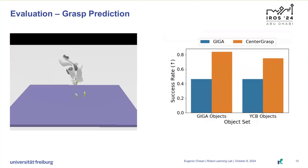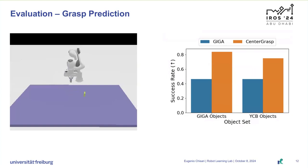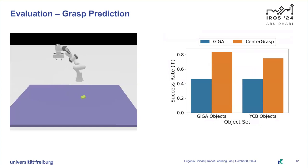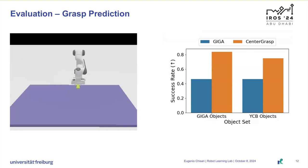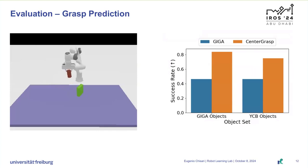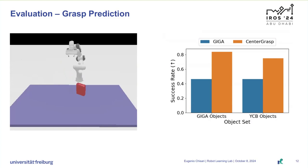We first evaluate our model in a simulated environment built using the Sapien simulator. The environment consists of a Franka robot with a wrist-mounted camera and a table where objects are randomly dropped. For each episode, the robot captures an RGBD observation, predicts a set of grasps, and then executes the chosen one. We evaluate grasp success against our main baseline GIGA on two different sets of objects: the objects from the original GIGA implementation as well as YCB objects. We find that CenterGrasp surpasses the grasp success metric for both sets of objects by a large margin.